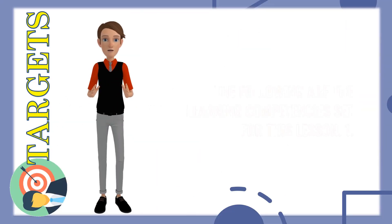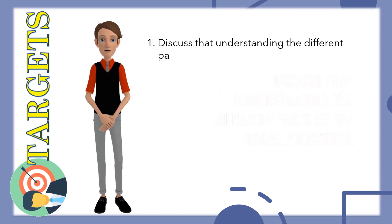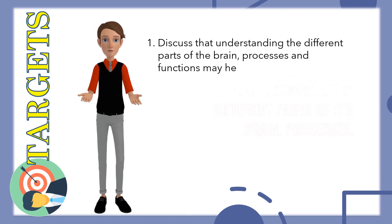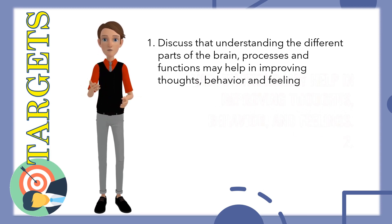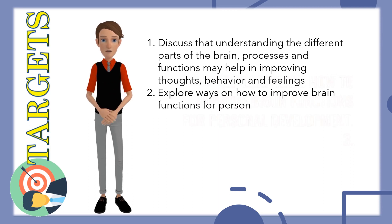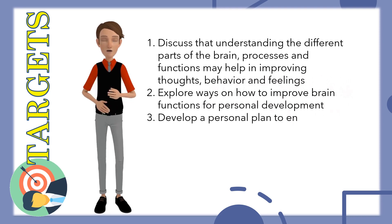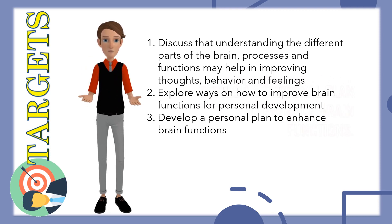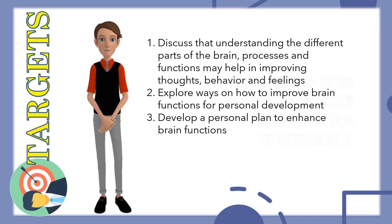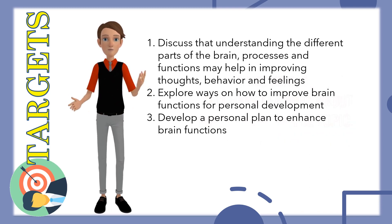The following are the learning competencies set for this lesson: 1. Discuss that understanding the different parts of the brain, processes, and functions may help in improving thoughts, behavior, and feelings. 2. Explore ways how to improve brain functions for personal development. 3. Develop a personal plan to enhance brain functions. Take note of these learning competencies since these are to be attained to determine if you have learned about the topic.